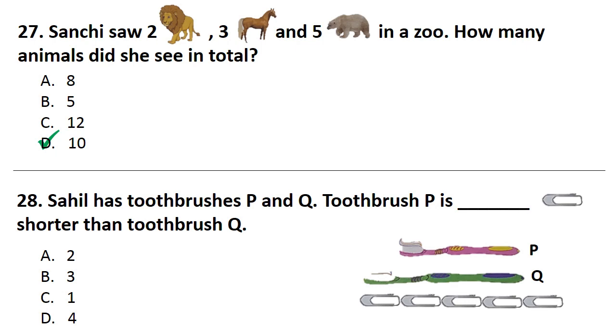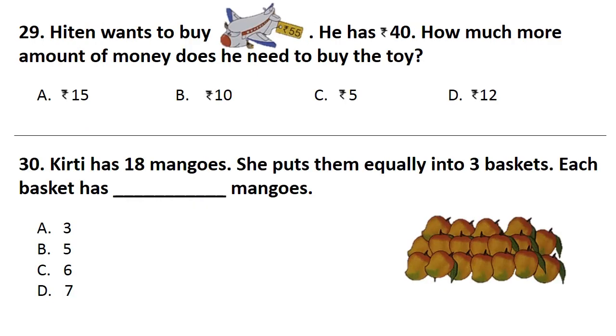Question No. 28. Sahil has toothbrushes P and Q. Toothbrush P is paper clip shorter than toothbrush Q. Answer is Option C. That is 1.